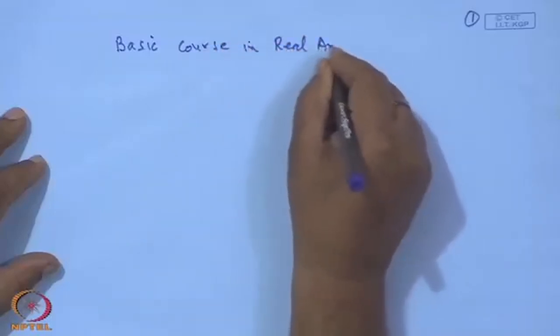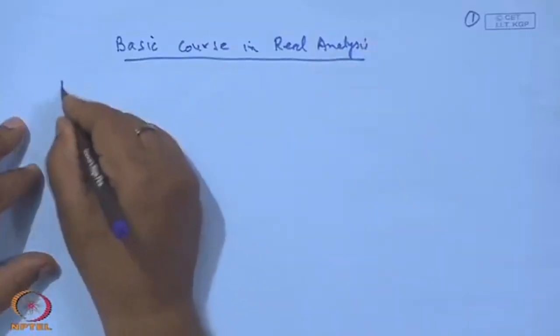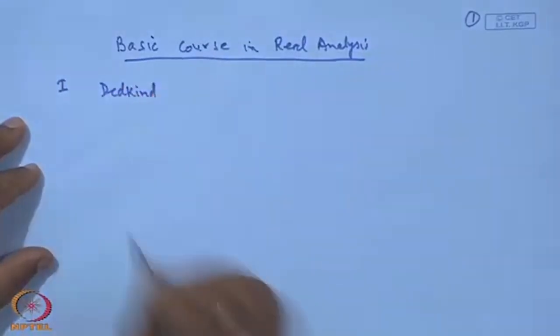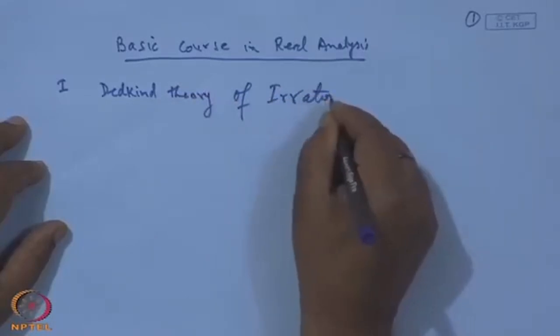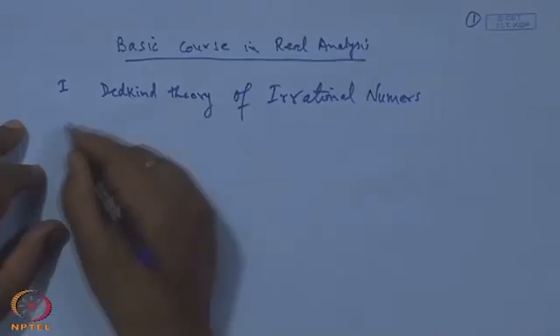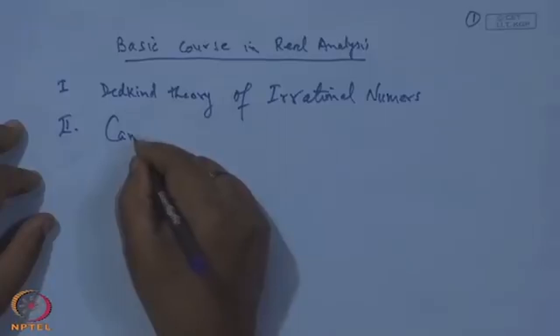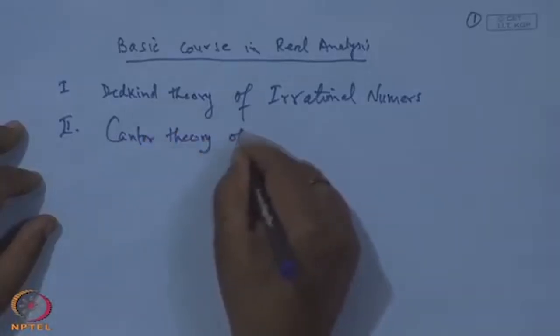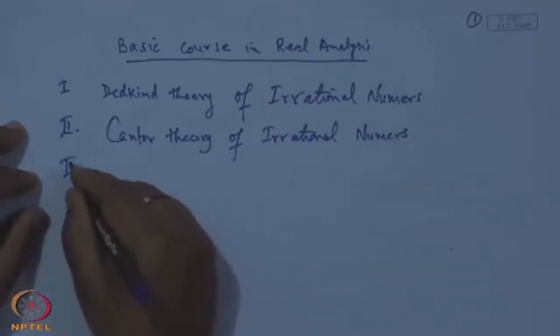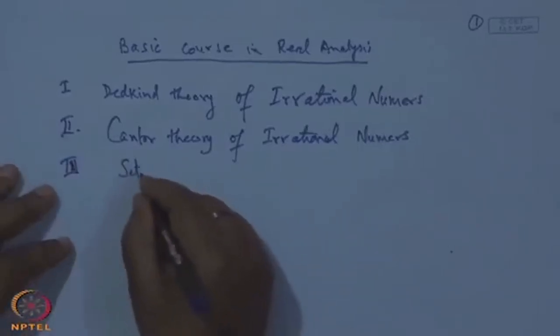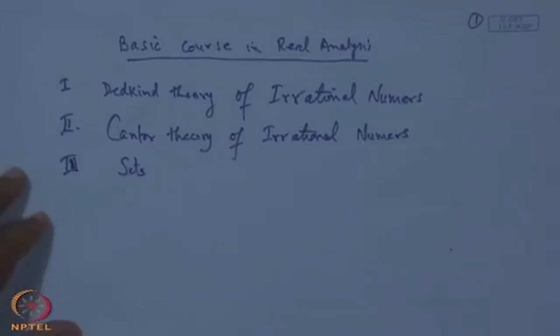This is a basic course in real analysis. The topics I will cover are: first, the Dedekind theory of real numbers; second, Cantor's theory of real numbers; third, sets which will include bounded sets, open, closed, and compact sets.